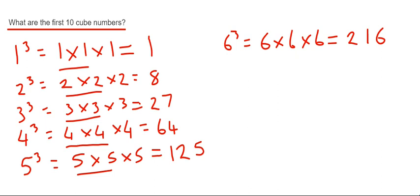Let's move now on to 7 cubed next. So 7 cubed is 7 times 7 times 7. So 7 times 7 is 49. And if you times that by another 7, we get the answer of 343.